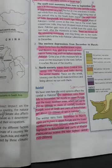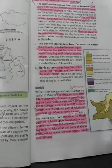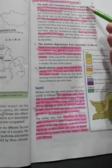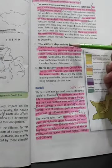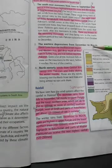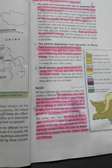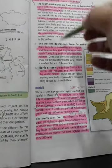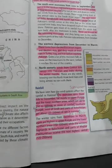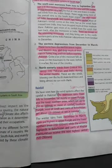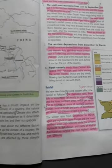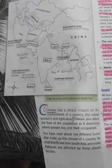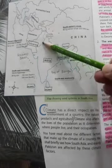The three main wind systems and rainfall patterns are: number one, the Southwest Monsoon from June to September; number two, the Western Depression from December to March; and number three, the North Easterly winds. These are the three main wind systems and rainfall patterns in South Asia.